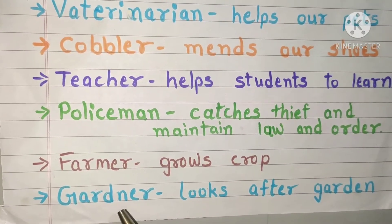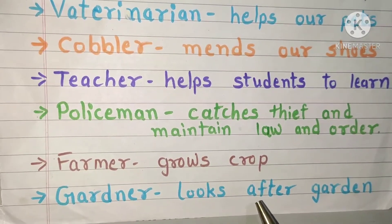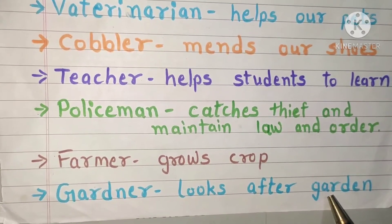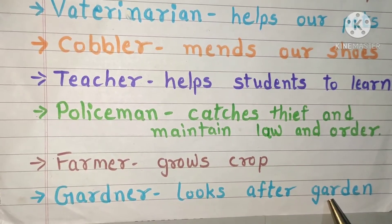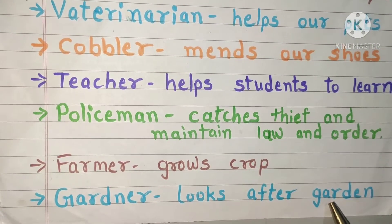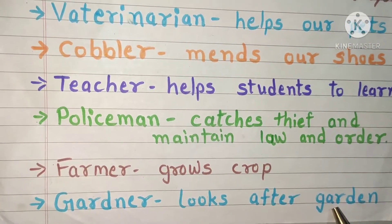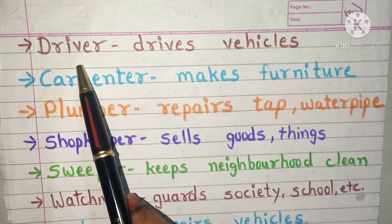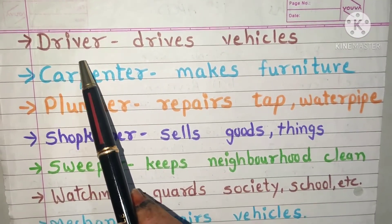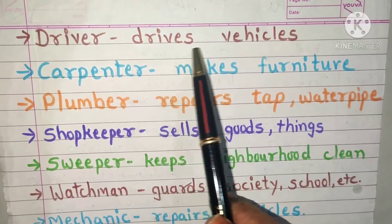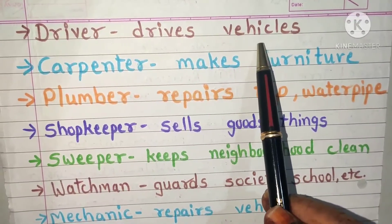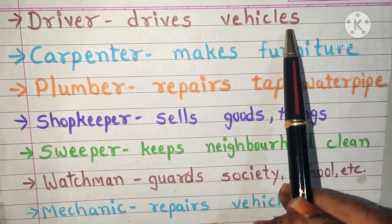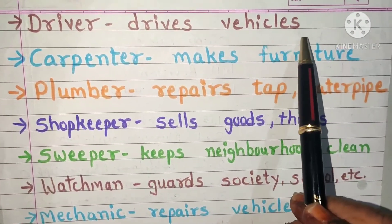Gardener looks after the garden. They plant small, different varieties of plants. Driver drives different vehicles like bus, car, auto, rickshaw, etc.